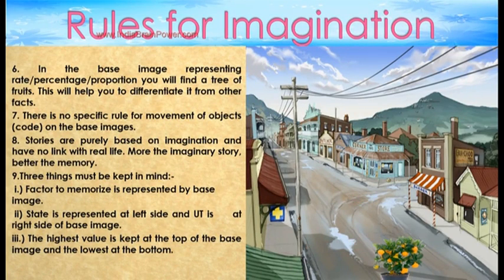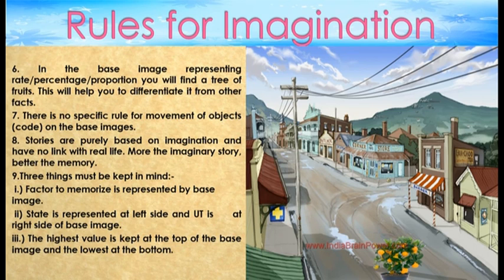The base image representing the rate, percentage, or proportion will feature a tree for fruits — this will help you differentiate it from other facts. There is no specific rule for the movement of objects or codes on the base images; the stories are purely based on imagination and have no link to real life.